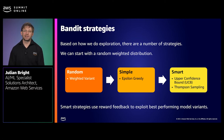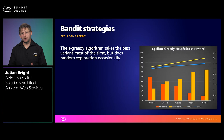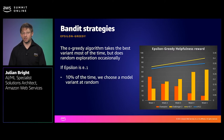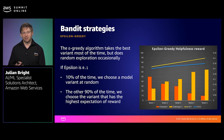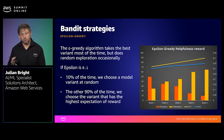The key takeaway is that these smart strategies use reward feedback to exploit the best performing model variants. The epsilon greedy algorithm selects the best model variant most of the time but does some random exploration occasionally based on the epsilon parameter. If epsilon is 0.1, then 10% of the time we choose a model variant at random, and the other 90% of the time we choose the variant with the highest expectation of reward. The bar graph depicts the relative reward over time for the champion and challenger variants. The yellow and blue lines depict cumulative reward probability for our Challenger 2 model variant, where the blue is slightly lower as its epsilon value is 0.2, meaning 20% of the time it's exploring, introducing more chance of selecting the poor performing variant.